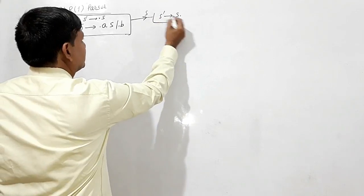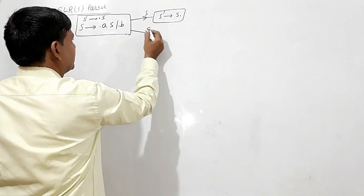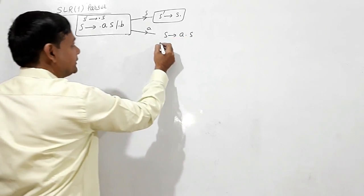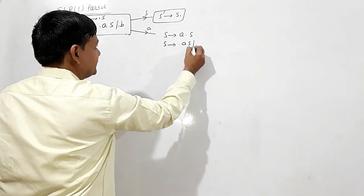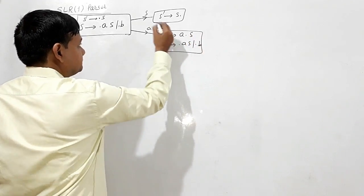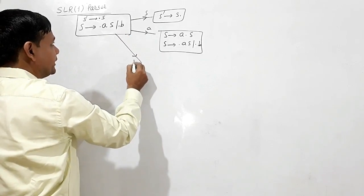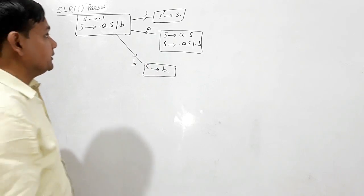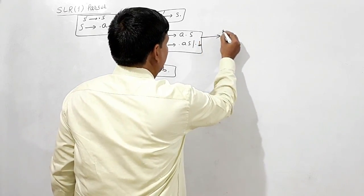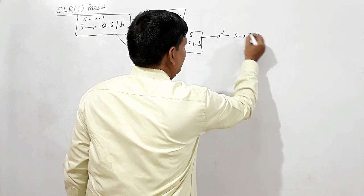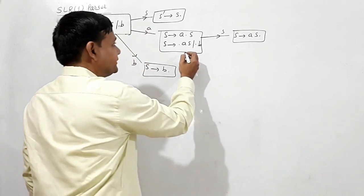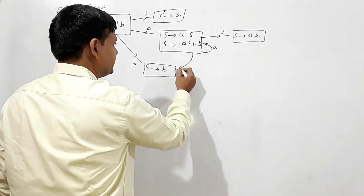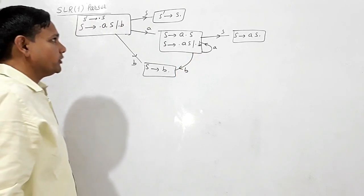If I read S, S' will give S dot. If I read small a, S will give A dot S. I have to write the closure of this S: S will give me .AS or .B. If I read B here, S will give me B dot. If I read S here, S will give me AS dot. If I read A it gives the same state, if I read B it gives this state.